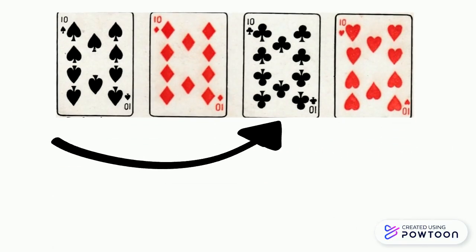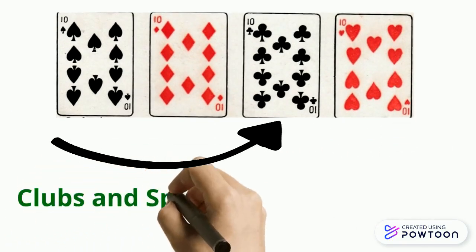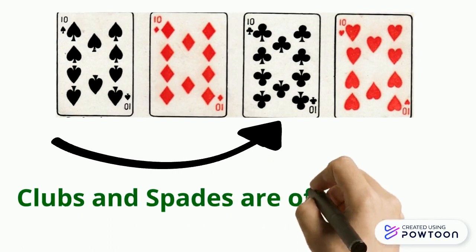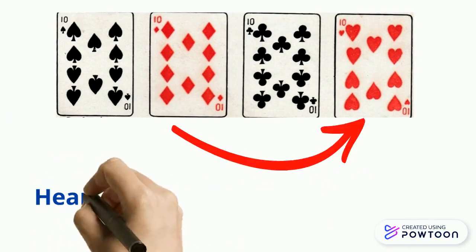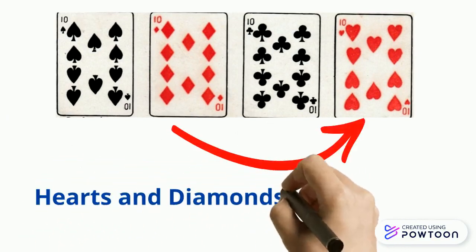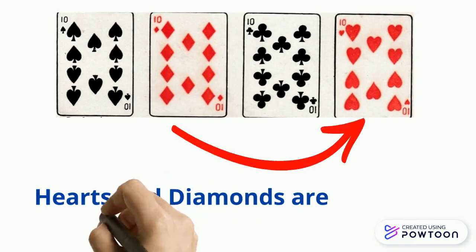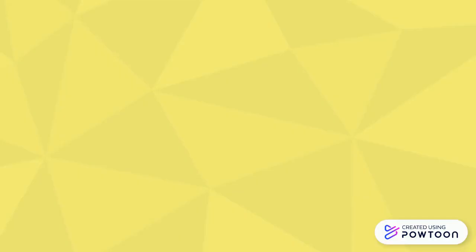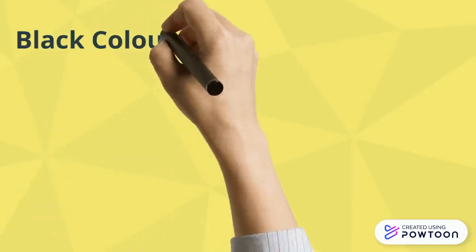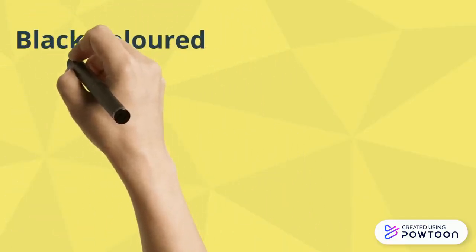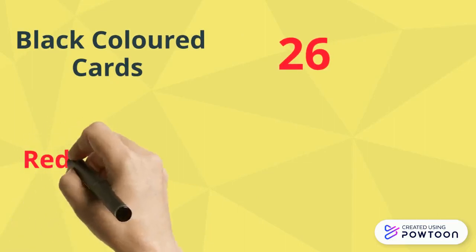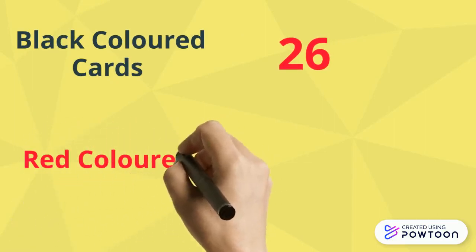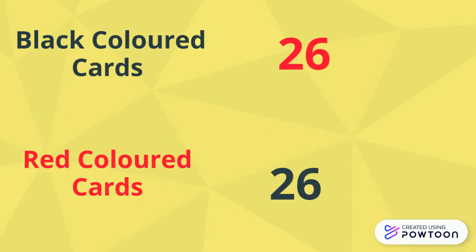Spades and clubs are of black color, whereas hearts and diamonds are of red color. In all, we have 26 black colored cards and 26 red colored cards.